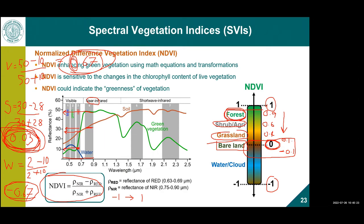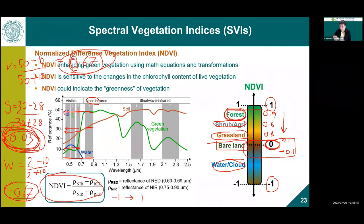In remote sensing, there are other indices better suited for water detection — such as the Normalized Difference Water Index (NDWI) or Normalized Difference Flood Index. NDVI is best used for vegetation-related analysis rather than water or soil detection.